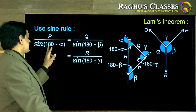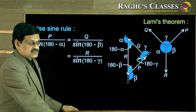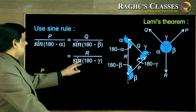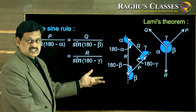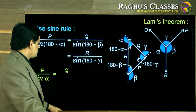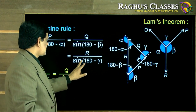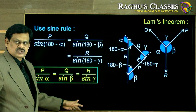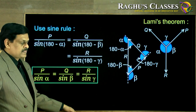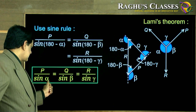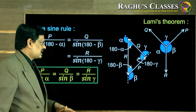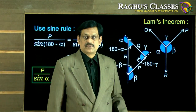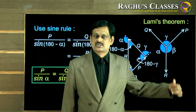Since sin(180 − α) = sin α, sin(180 − β) = sin β, and sin(180 − γ) = sin γ, the relation reduces to: P / sin α = Q / sin β = R / sin γ. This gives a clean relationship between the three forces P, Q, R and the angles α, β, γ.